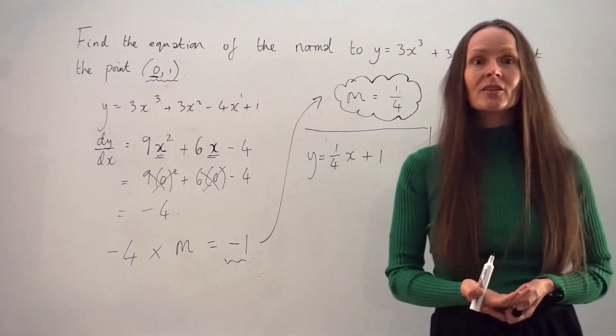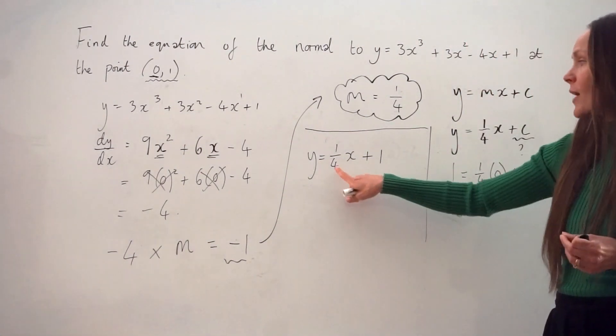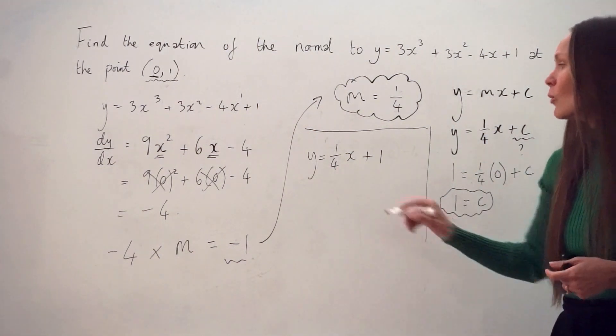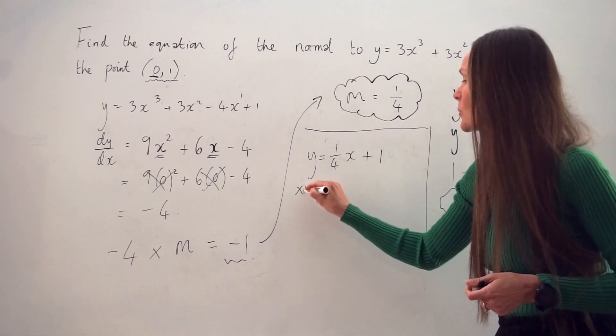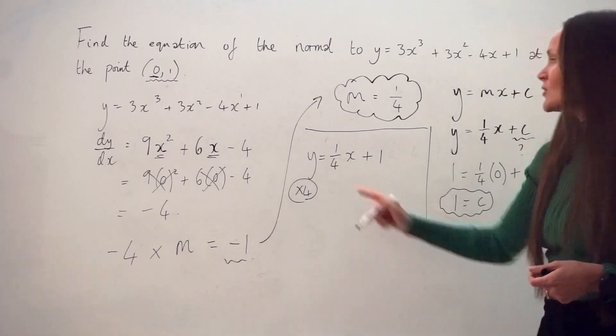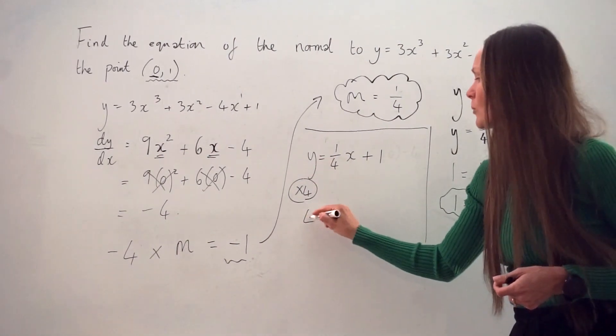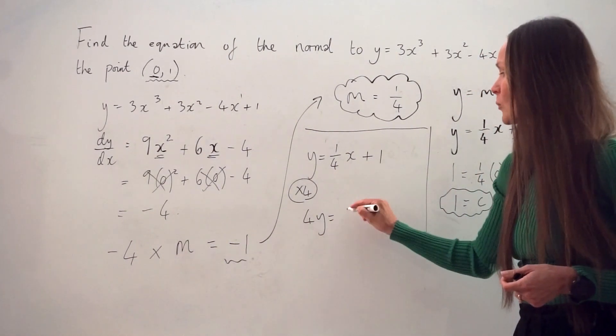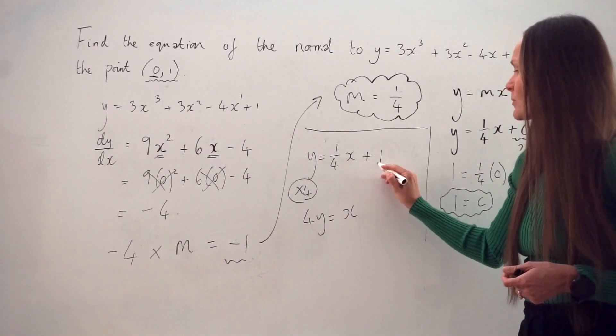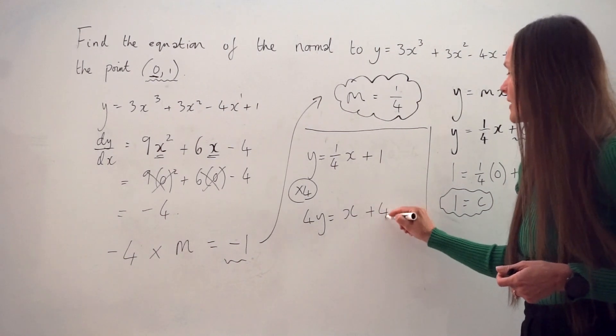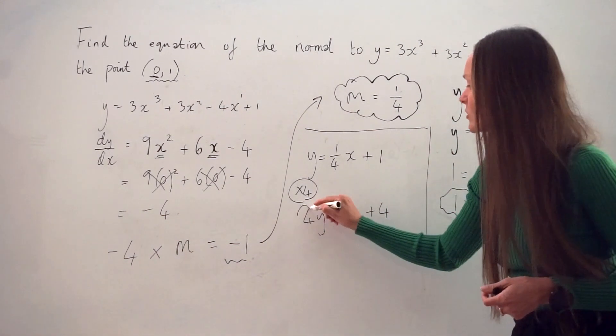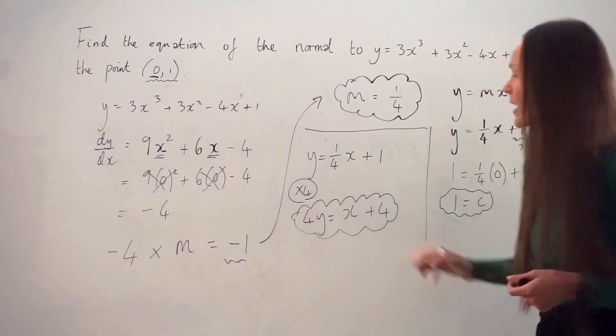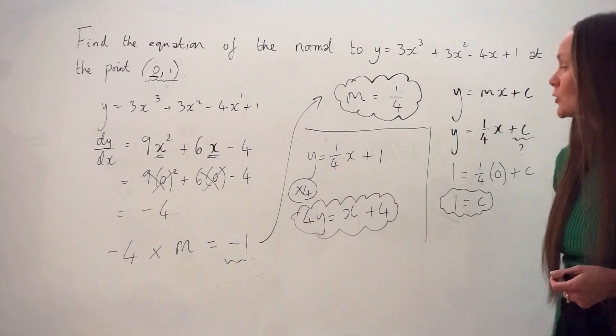Sometimes in an exam question, it asks you not to have fractions here. So if you wanted to get rid of this fraction here, what you can do is multiply everything in this equation by 4. So that y times 4 is 4y. A quarter times 4 is just 1, so 1x. And 1 times 4 is 4. But essentially, these are the same equations. And you only need to do this step if it asks for integer values, so you don't want a fraction here in your equation.